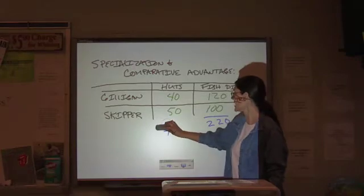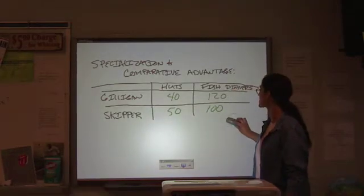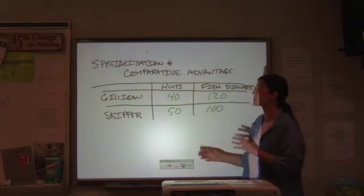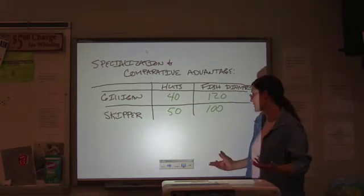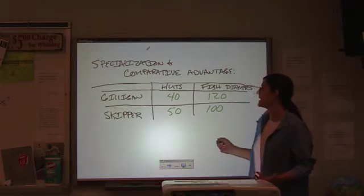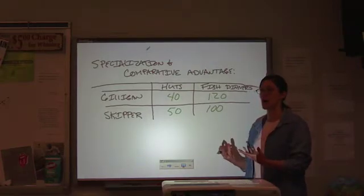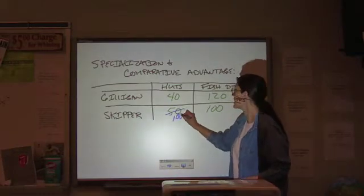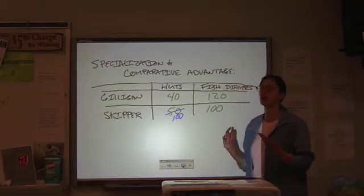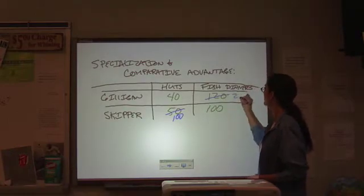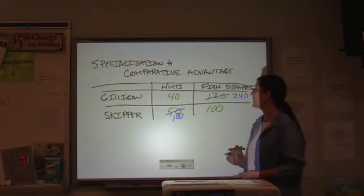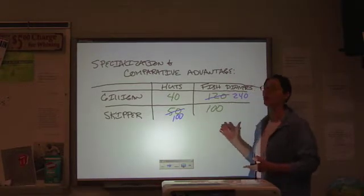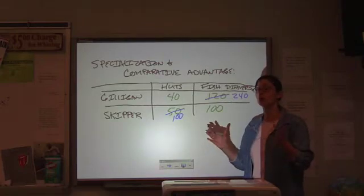But if they specialize, if we say, okay, instead of splitting our time between huts and fish, who's better at both? What are the numbers that we end up with? If the skipper spends all of his time on just huts, he would get 100. If Gilligan spends all of his time catching fish dinners, we have 240, which gives us bigger totals than if we just had 90 and 220. So already we're doing better.